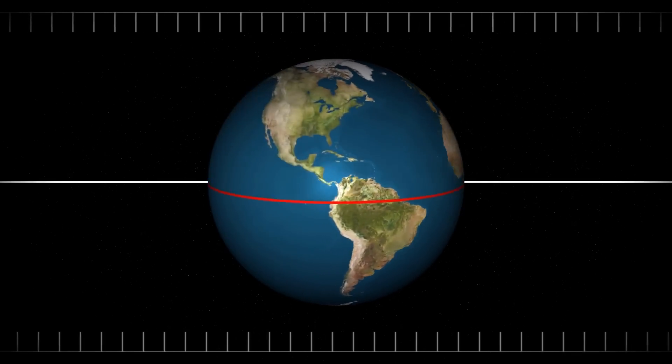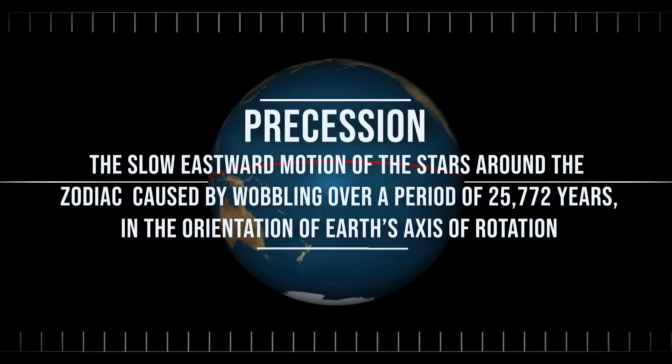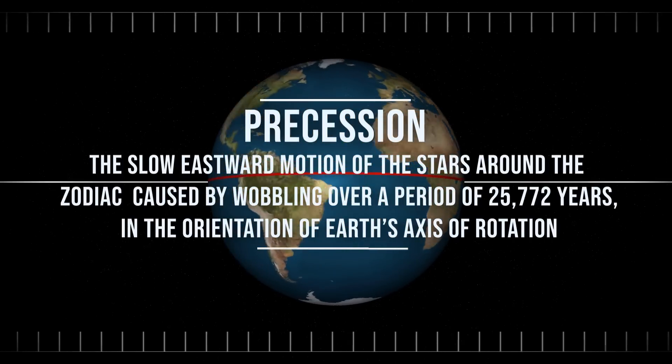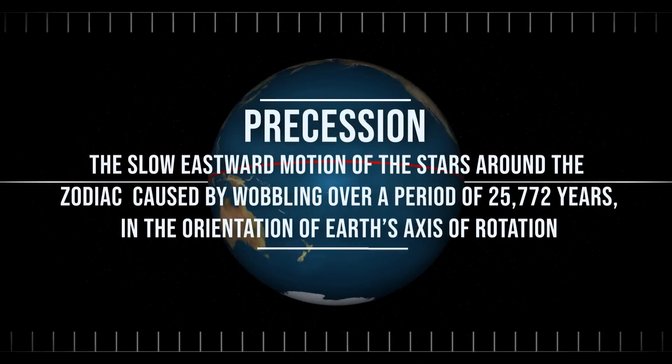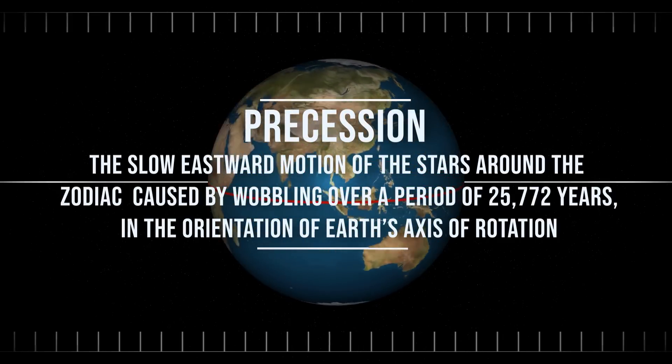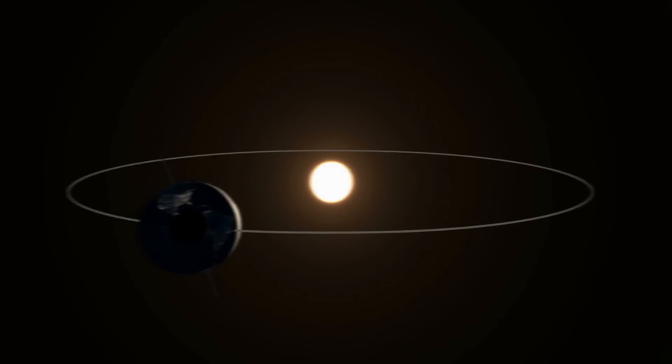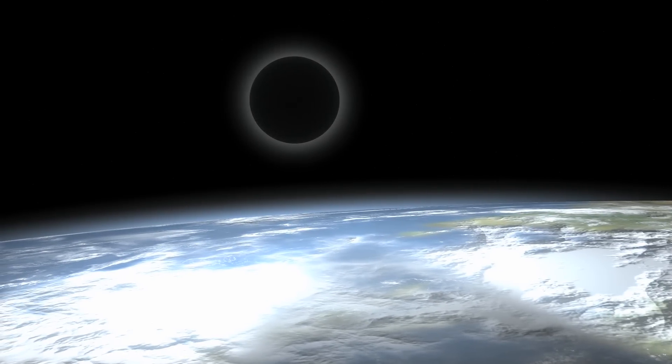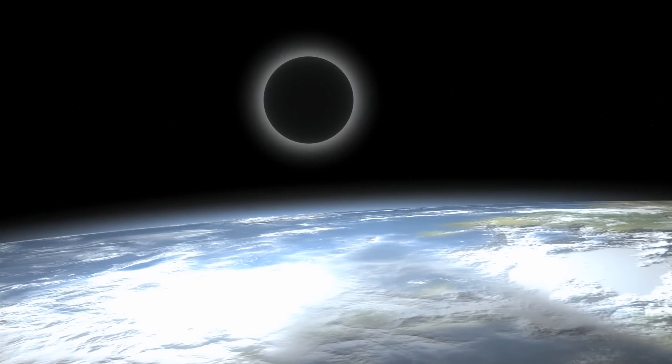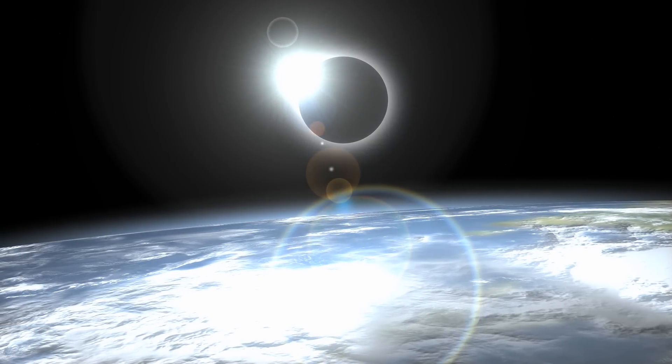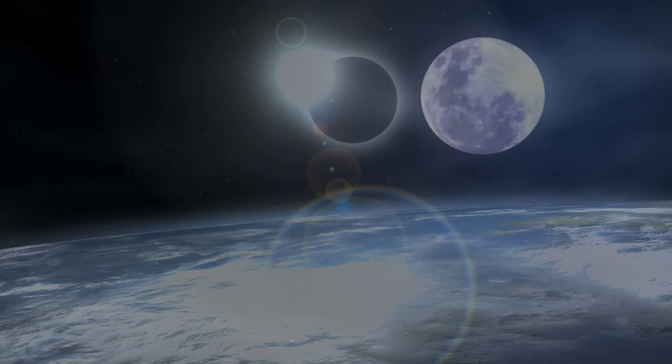Another of Hipparchus's contributions was the discovery of precession, the slow eastward motion of the stars around the zodiac caused by wobbling, over a period of 25,772 years, in the orientation of Earth's axis of rotation. Hipparchus's writings on this subject have not survived, but his ideas can be reconstructed from summaries given by Ptolemy. Hipparchus used observations of several fixed stars, taken with respect to the eclipsed Moon, which had been made by some of his predecessors. On comparing these with eclipse observations he had made himself, he deduced that the fixed stars move eastward not less than 1 degree in 100 years.